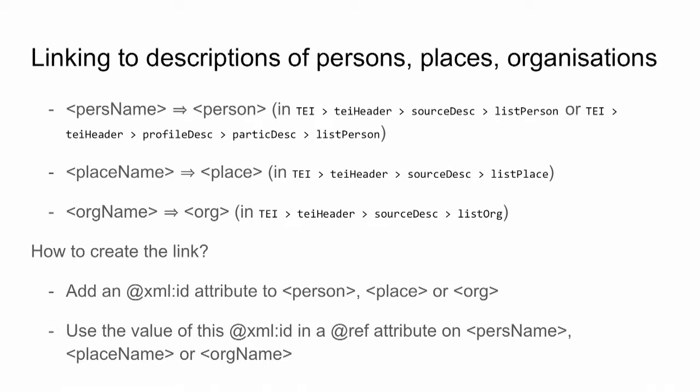Now we are going to see how to create a link between the description of people, places, or organizations and the occurrences of their name in the text. With the previous example, we just said that this part of the text is a place name, or this part is a reference to a person, but we have not created a link to a description of the actual place or person. To create that, we start by creating a list of persons, places, and organizations if needed, in the TEI header. We then attribute a unique ID using the xml:id attribute to each person or place in the list.